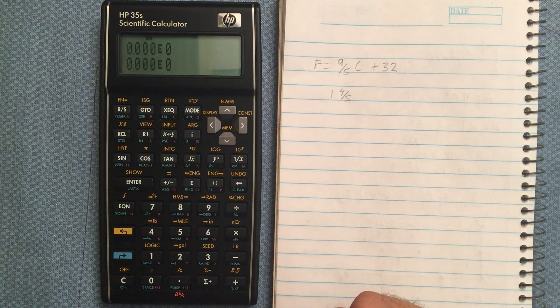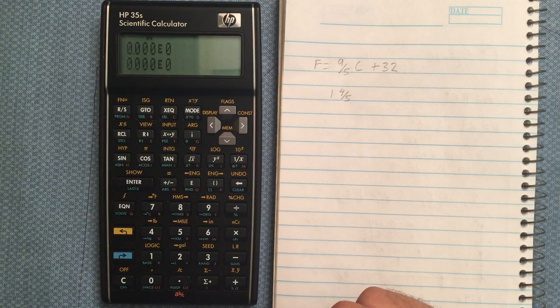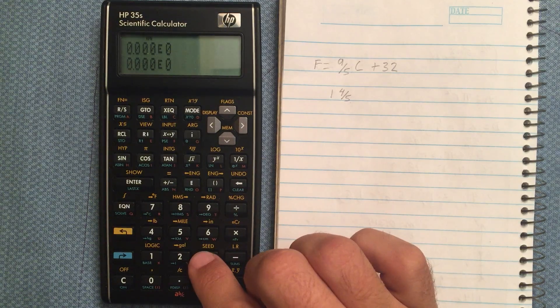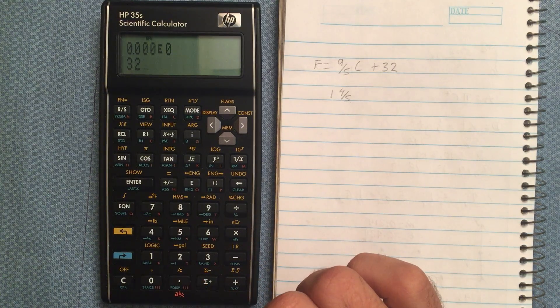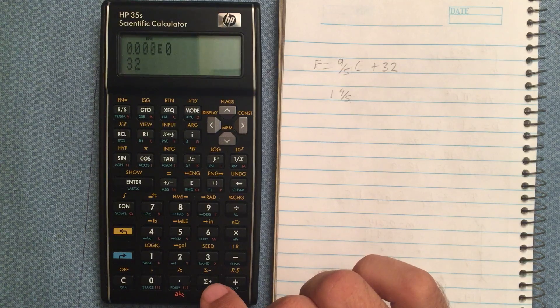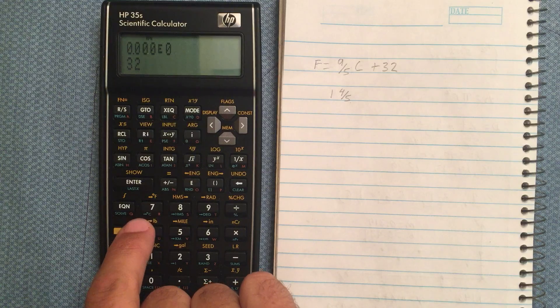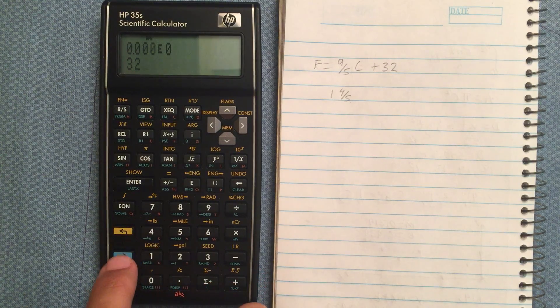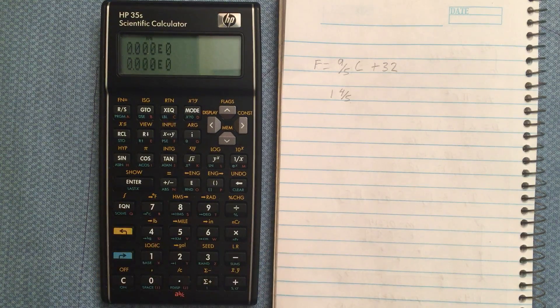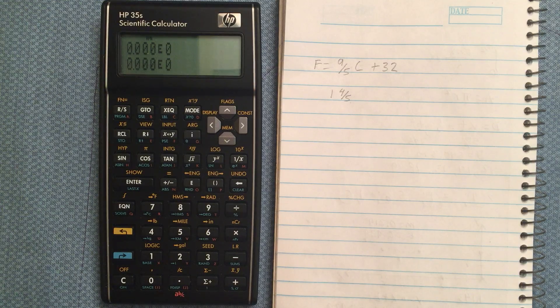I really like the quick conversions on this calculator as well. So, for example, if I enter in 32, and I want to convert that from degrees Fahrenheit to Celsius, then I use the to Celsius button here, so blue shift there, and that tells me it's 0 degrees Celsius.